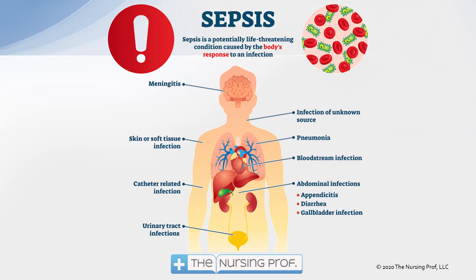A little background: sepsis is a potentially life-threatening type of infection that is going to stimulate the systemic inflammatory response. There are a whole bunch of different ways that infection can enter the body. Very common types of infections that cause sepsis are urinary tract infections and pneumonia. Other types like abdominal infections — maybe from a ruptured appendix or a ruptured bowel — are also very prone to developing sepsis.